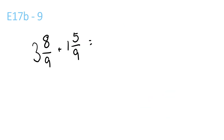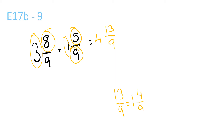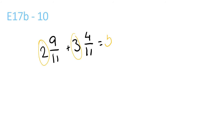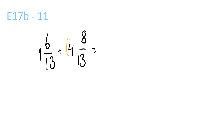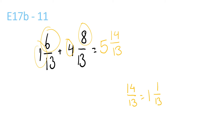New page, new colour. So E17B number 9. 3 plus 1 is 4. 5 plus 8 is 13, over 9, the bottom one stays the same. 13 over 9 is equal to 1 and 4 over 9. 1 and 4 over 9 plus 4 is equal to 5 and 4 over 9. 2 plus 3 is 5 and 4 plus 9 is 13 over 11. 13 over 11 is equal to 1 and 2 over 11. 1 and 2 over 11 plus 5 is equal to 6 and 2 over 11. 4 plus 1 is 5 and 4 over 11, the bottom one stays the same. 14 over 13 is also equal to 1 and 1 over 13. So you get 1 and 1 over 13 plus 5, so it's 6 and 1 over 13.